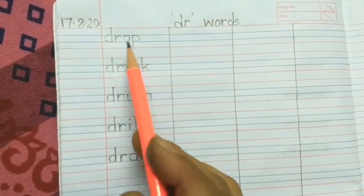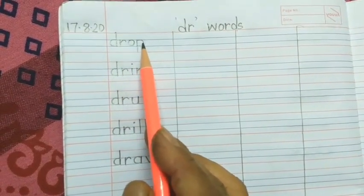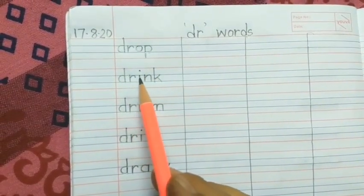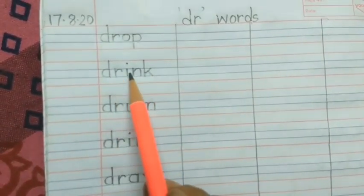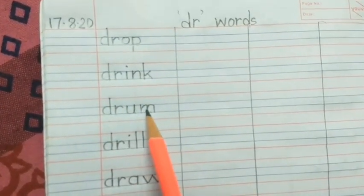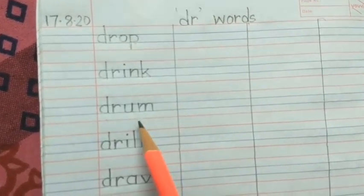You also repeat after me. D-R-O-P — drop. D-R-I-N-K — drink. D-R-U-M — drum. D-R-I-L-L — drill. D-R-A-W — draw.